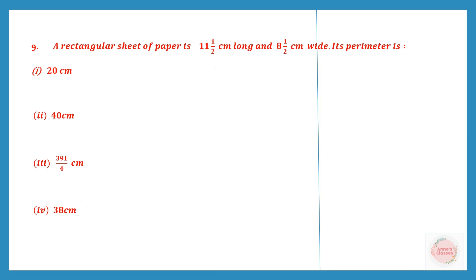Question 9. A rectangular sheet of paper is 11½ cm long and 8½ cm wide. What is its perimeter? The formula to find the perimeter of a rectangle is: perimeter equals 2 into length plus breadth.